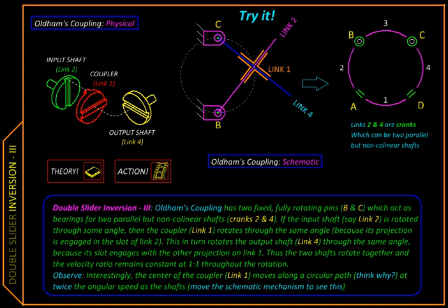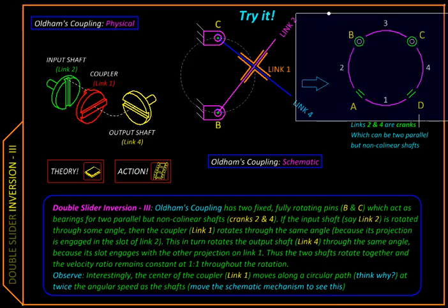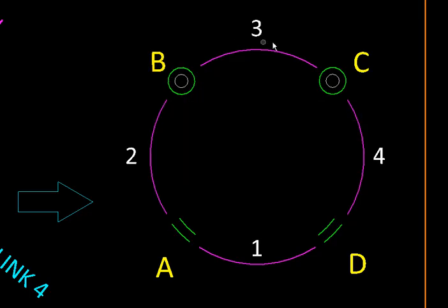Here we will see an interesting inversion of the double slider linkage. The linkage is shown here in a schematic form, so it has essentially four links and four pairs. Two of them are revolute pairs and two are sliders.